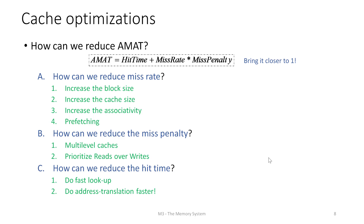In the next class we will spend more time on each of these optimizations and see how they help reduce the average memory access time of the cache.